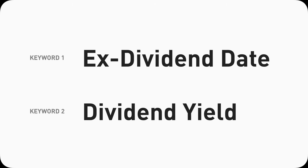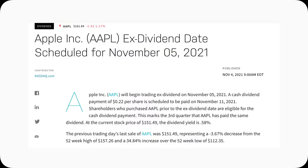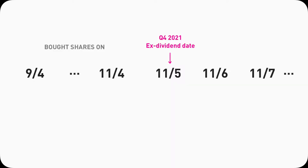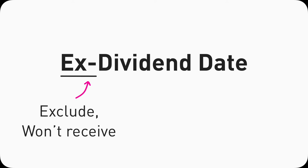There are two key terms to know at the most basic and fundamental level. One is called the ex-dividend date. It means that you will not receive any dividends if you own the stock on this date or later. Apple's 22 cents dividend per share has an ex-dividend date of November 5th, 2021. The X means exclude — that's the day you will be excluded from receiving dividends. So if you want to receive a dividend, buy the stock before the ex-dividend date.